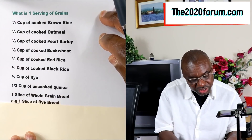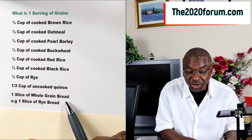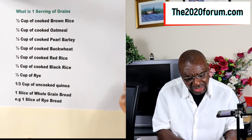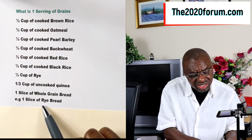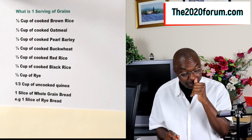If you are into bread, one slice of whole grain bread — bread that has been made from the whole grain with the bran, endosperm, and germ — counts as one serving. A lot of rye bread tends to be made from whole grain, so one slice of whole grain or rye bread will represent one serving.